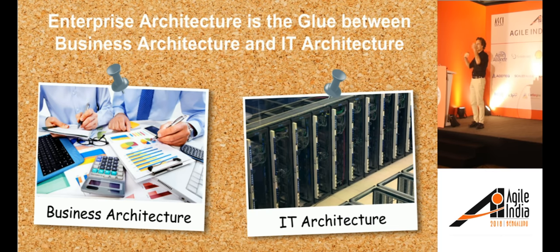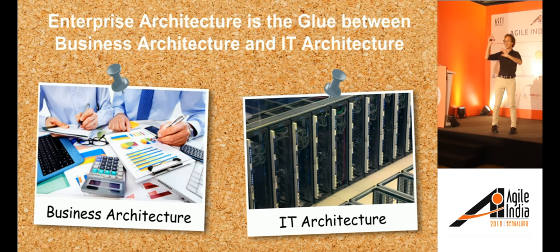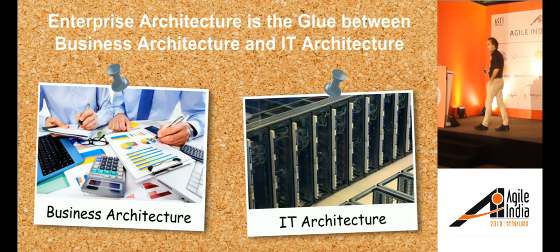The two — business architecture and IT architecture — need to have a connection, and that is the key role of enterprise architecture: to make sure that the IT architecture matches the business architecture. Because if that is out of whack, all the fancy stuff we do in IT is pointless. We could be building Docker containers and Kubernetes, but if it doesn't match what the business actually needs, that is about the worst case scenario you can have.